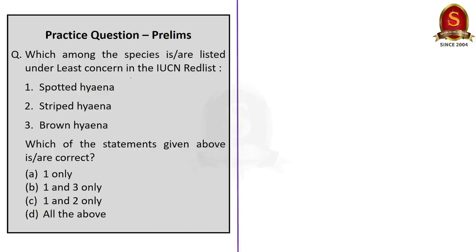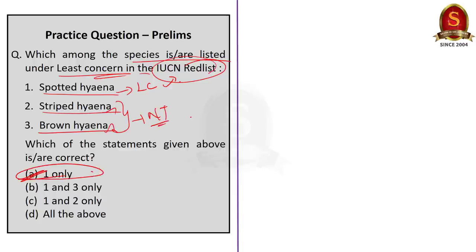Look at this question. This question is regarding hyena. Which among the species is or are listed under least concern in IUCN red list? Statement 1: spotted hyena. Statement 2: striped hyena. Statement 3: brown hyena. Here, the correct answer will be option A, 1 only because the spotted hyena is listed as least concern in IUCN red list. Other two hyenas, that is striped hyena and brown hyena, are listed as near threatened. So our answer will be option A, 1 only.